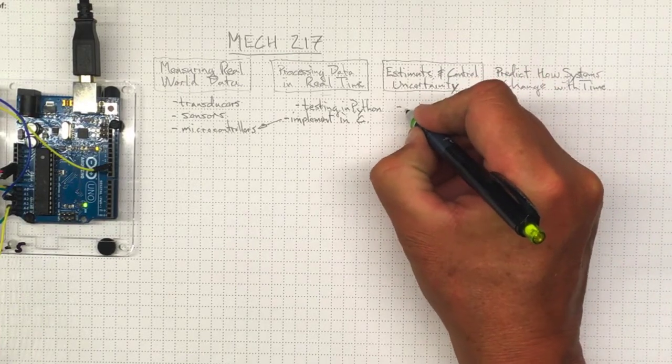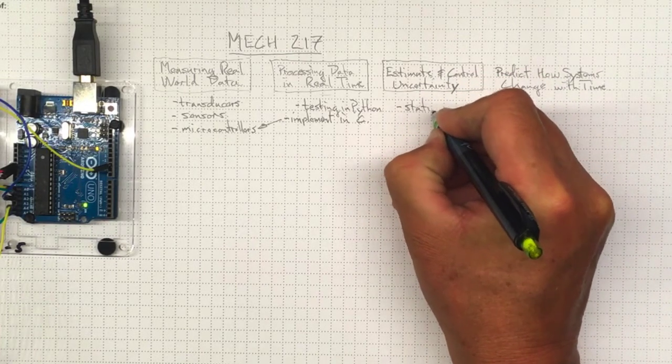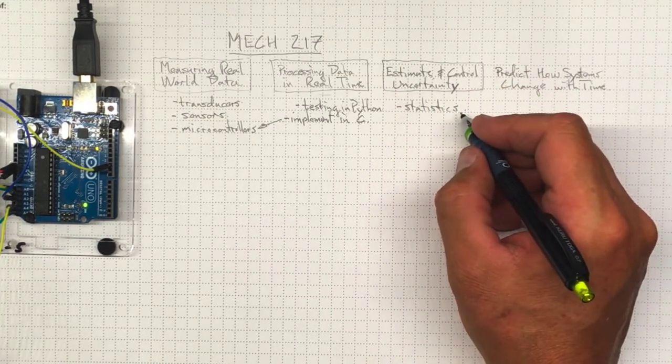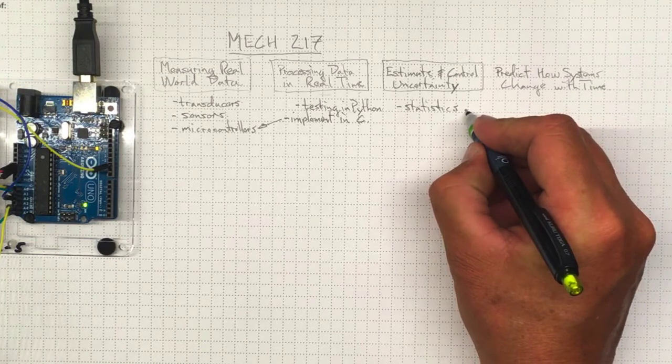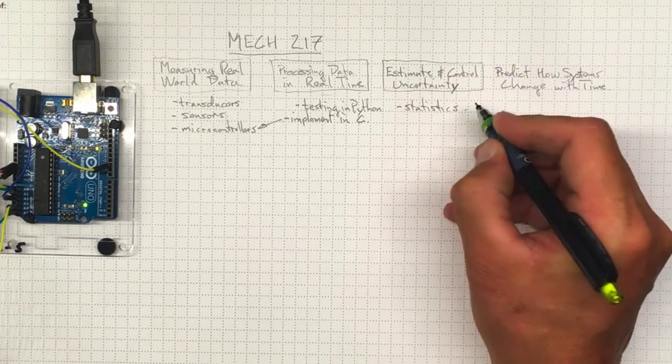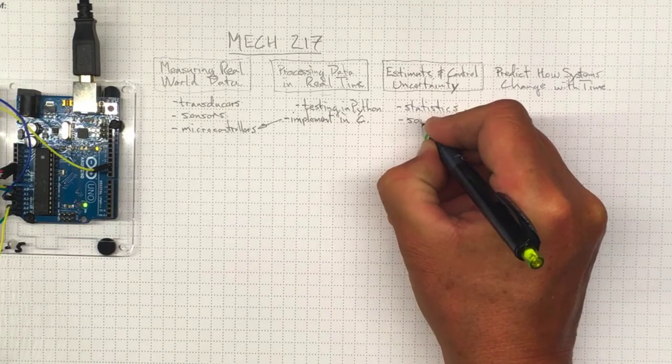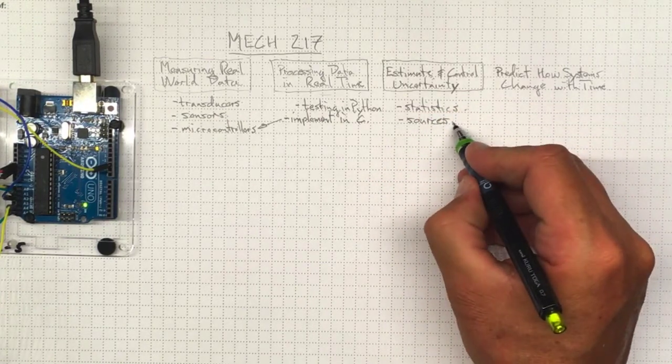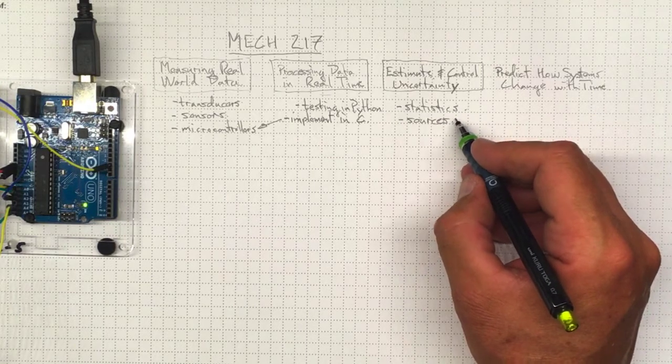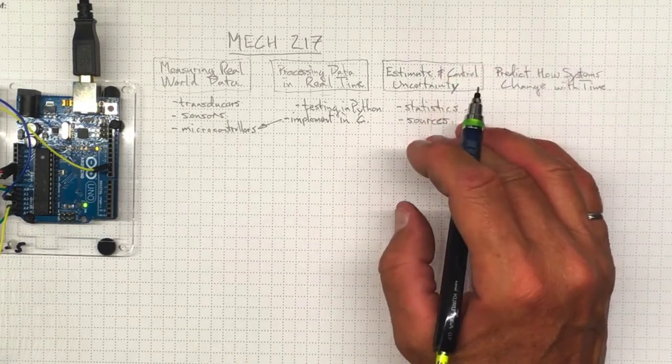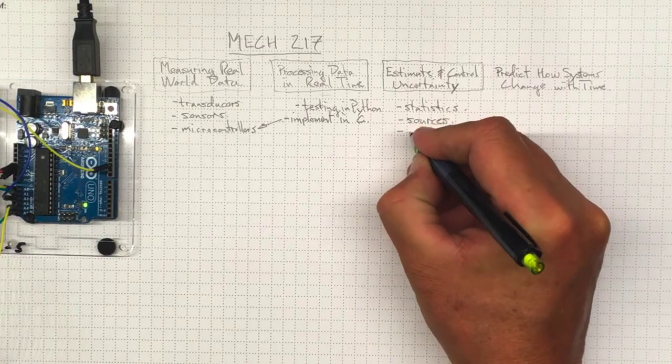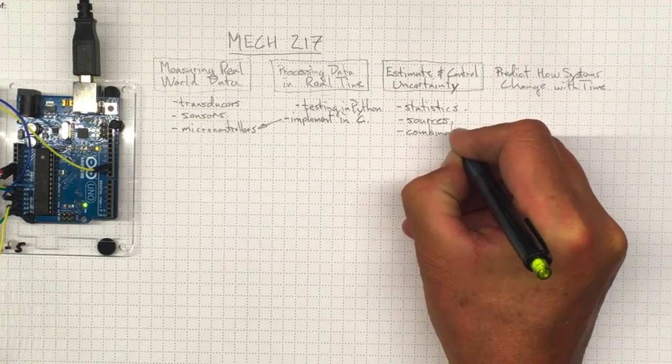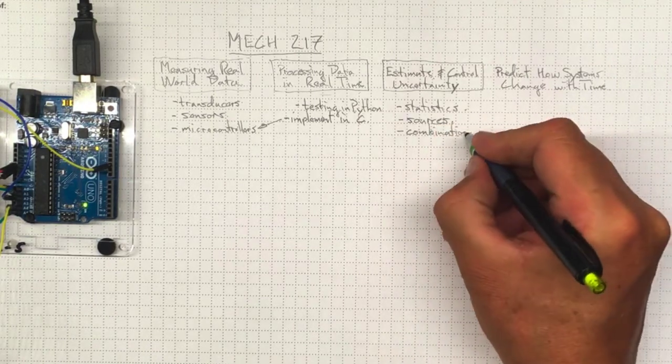To understand that uncertainty, we have to do a little bit of statistics. And we're going to do that statistics in a very practical, hands-on way without a lot of theory. We need to understand the sources of that uncertainty. What causes different kinds of problems in measurements? What causes our measurements to be a little bit incorrect? And we need to know how all of those sources are going to combine together to have an effect on our overall measurement.